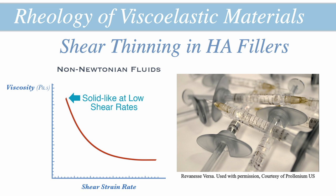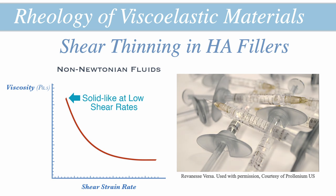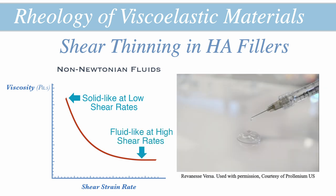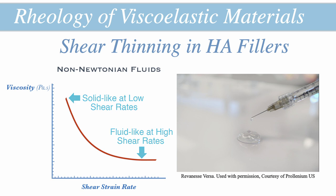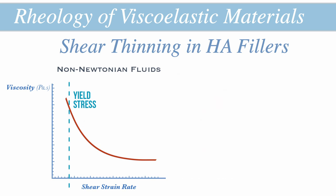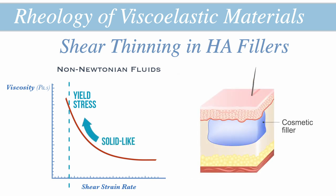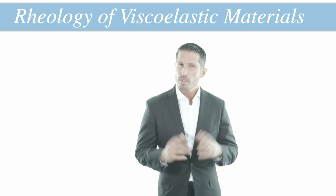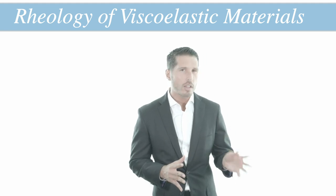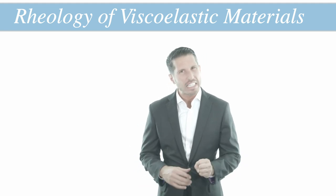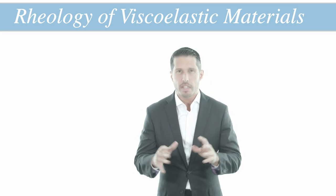At rest in the syringe, the hyaluronic acid gel looks and behaves more like a solid. However, once exposed to the high stress and shearing rates during extrusion through a small needle or cannula, the viscosity of the hyaluronic acid filler decreases dramatically, allowing it to flow out smoothly. The pressure at which this occurs is known as the yield stress, and above it the gel behaves more like a fluid. Once settled in the tissues, due to the low shear rates of human soft tissues, it once again behaves more like a solid, displaying significant elasticity and resistance to deformation.